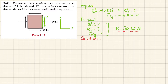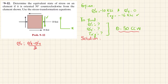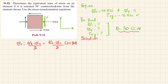The stress transformation equation for Sigma X dash is: Sigma X dash equals (Sigma X plus Sigma Y) divided by 2, plus (Sigma X minus Sigma Y) divided by 2 times cosine of 2 theta, plus Tau XY times sine of 2 theta.